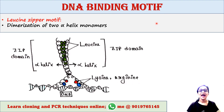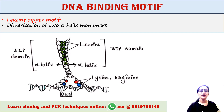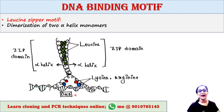The leucine zipper actually interacts with DNA via some basic residues such as lysine and arginine. These are basic residues, so they have positive charges, and DNA has a negative charge — because of that, this part of the leucine zipper motif binds DNA easily. The leucine zipper motif is found in different DNA binding proteins.